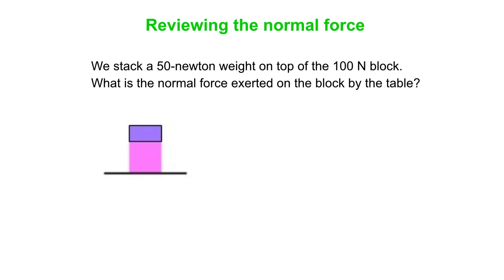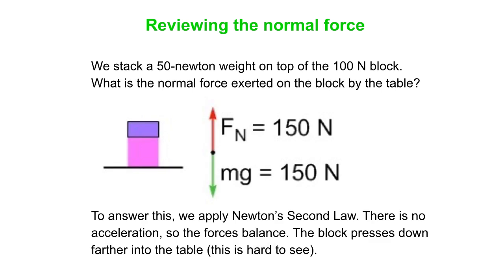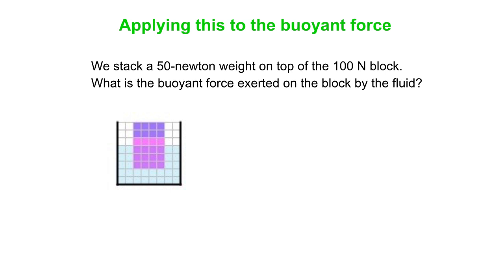Let's go back to our block on a table and stack an extra 50-newton weight on top. What's the normal force now that the table exerts on the block? We treat the two objects as one combined system with a weight of 150 newtons. Since it stays at rest, the table must exert a 150-newton upward force. Adding that extra weight presses the block down further into the table. Similarly, if you place that 50-newton weight on top of the original 100-newton block in the fluid, you can really see the block sink further into the fluid.